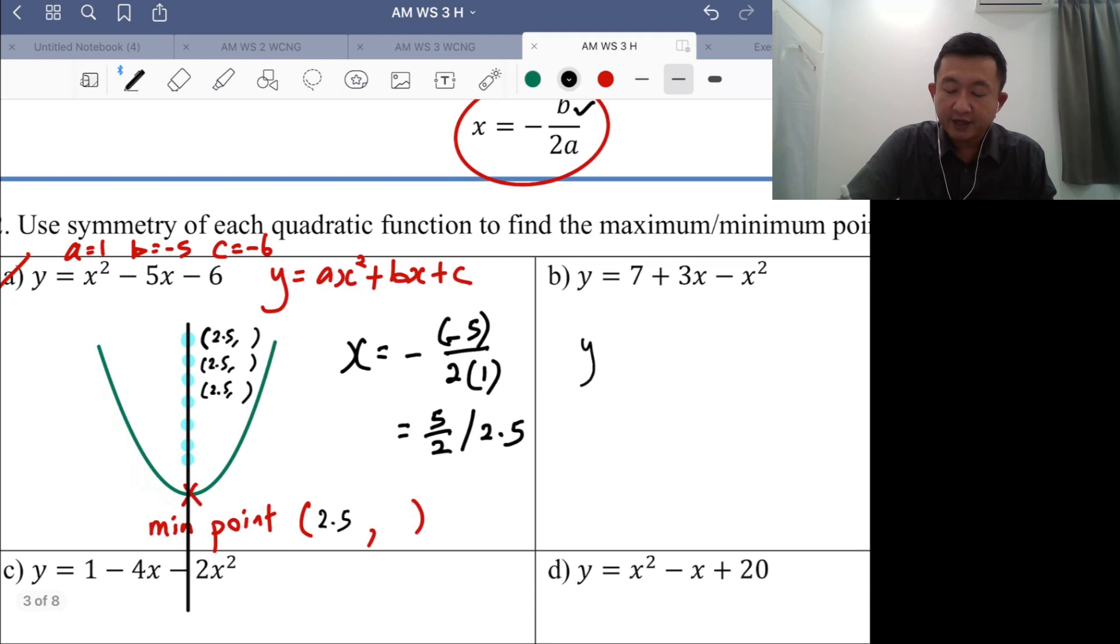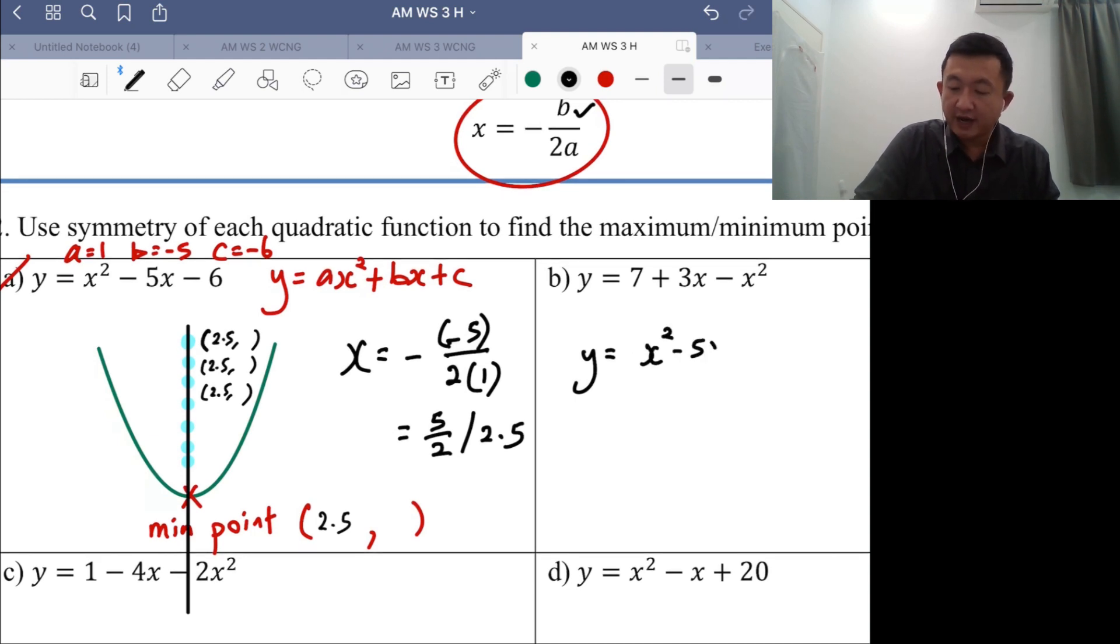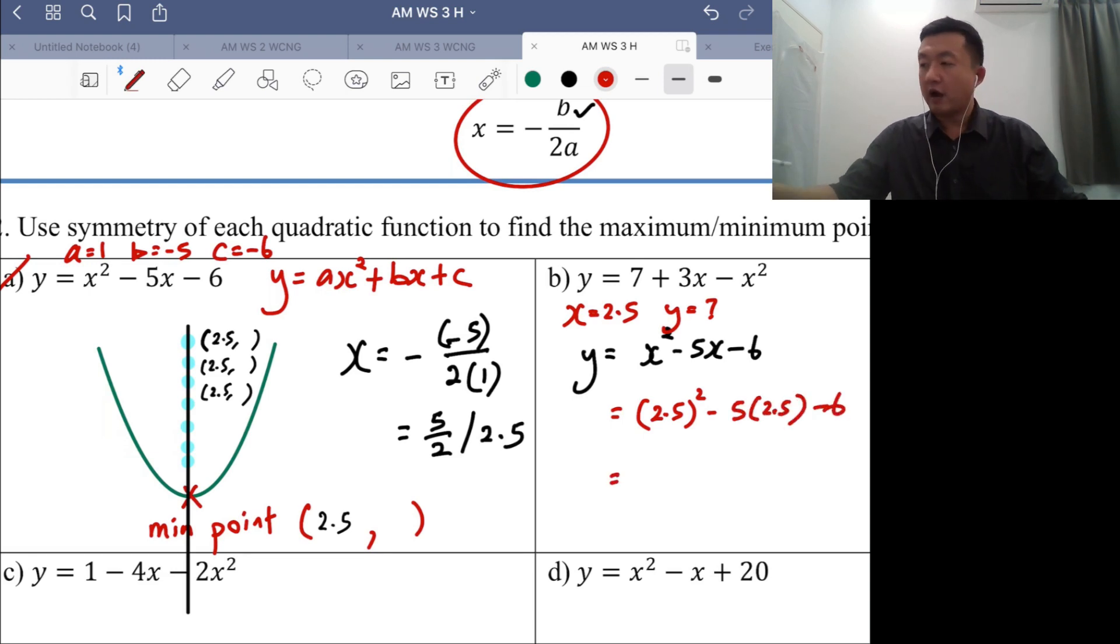You have y equals x squared minus 5x minus 6. So what you're doing now is when your x equals 2.5, what is the corresponding value of y? So you just have to put in, replace x with 2.5.